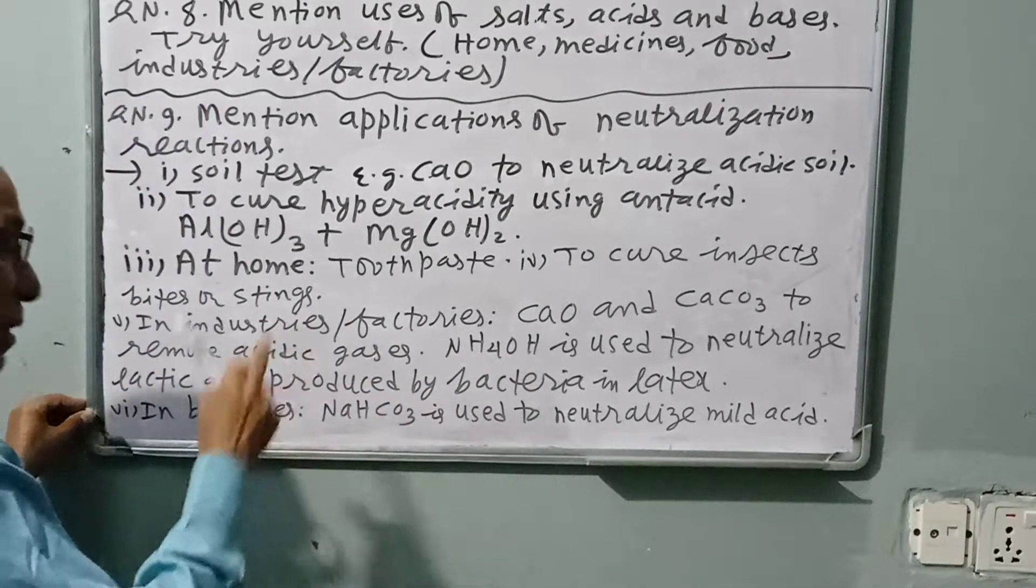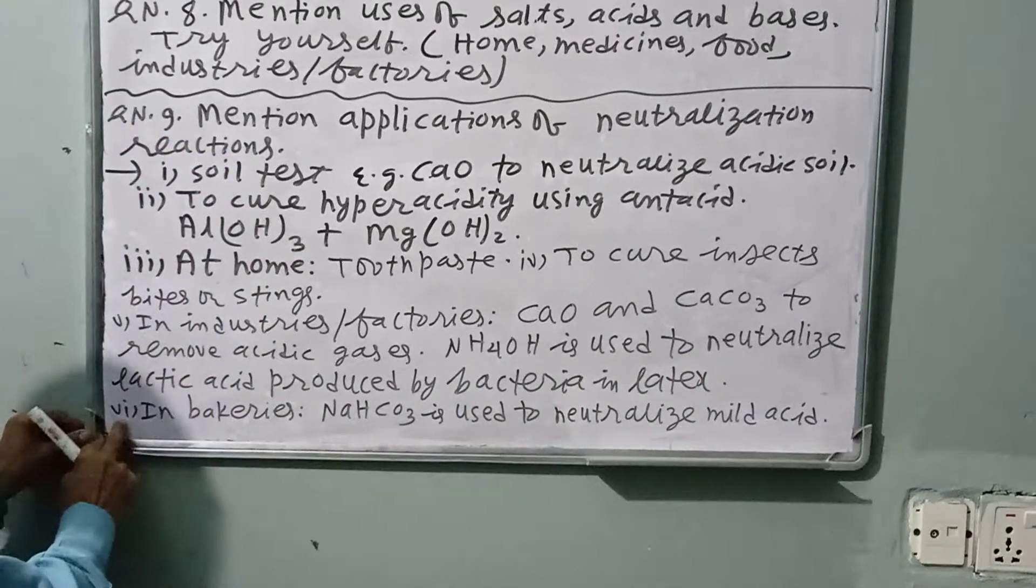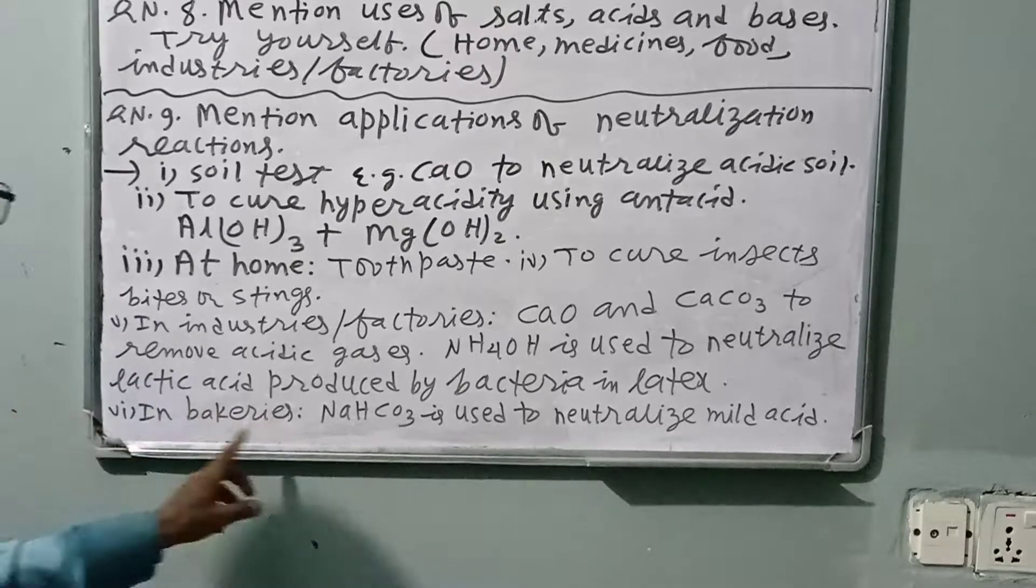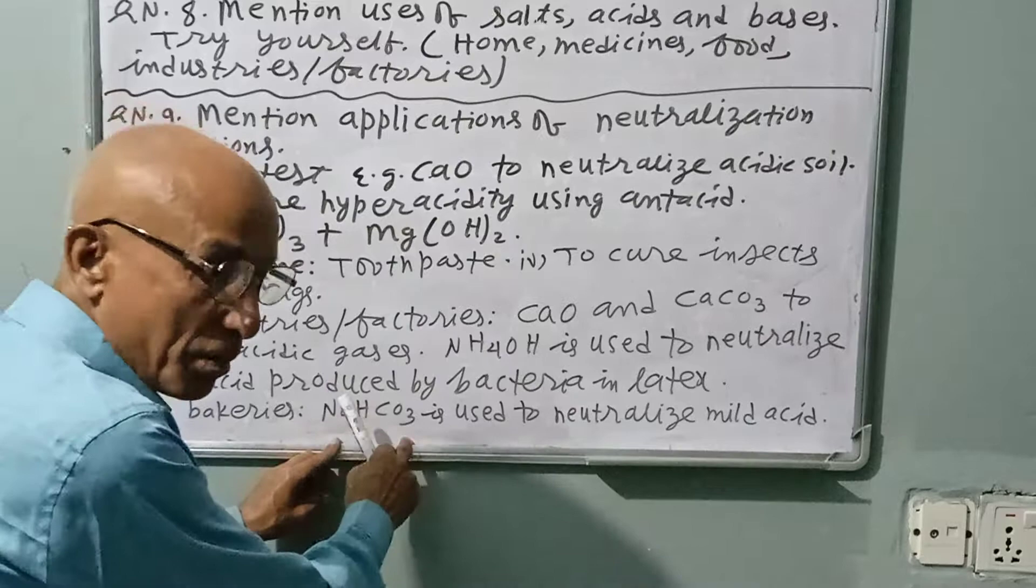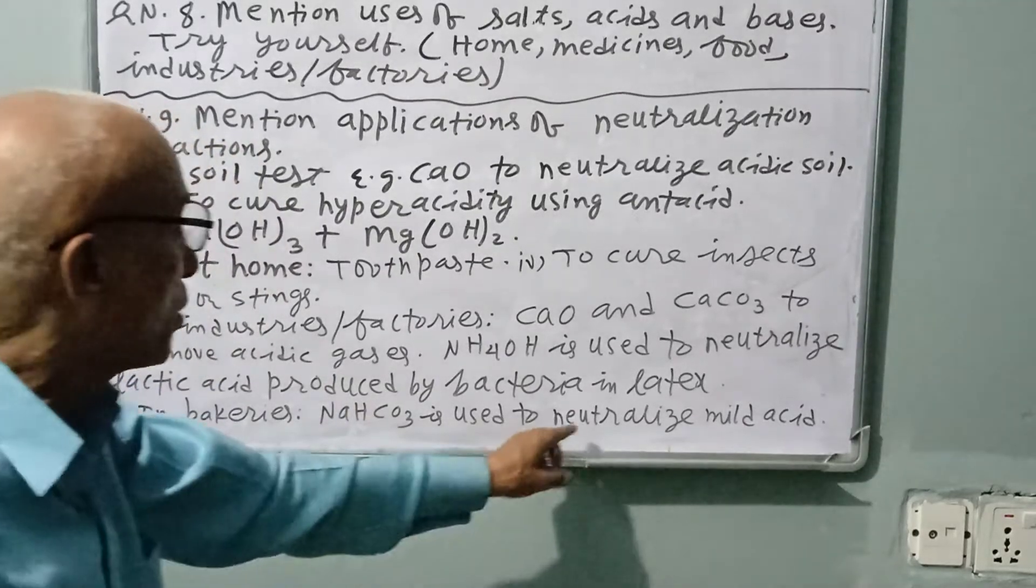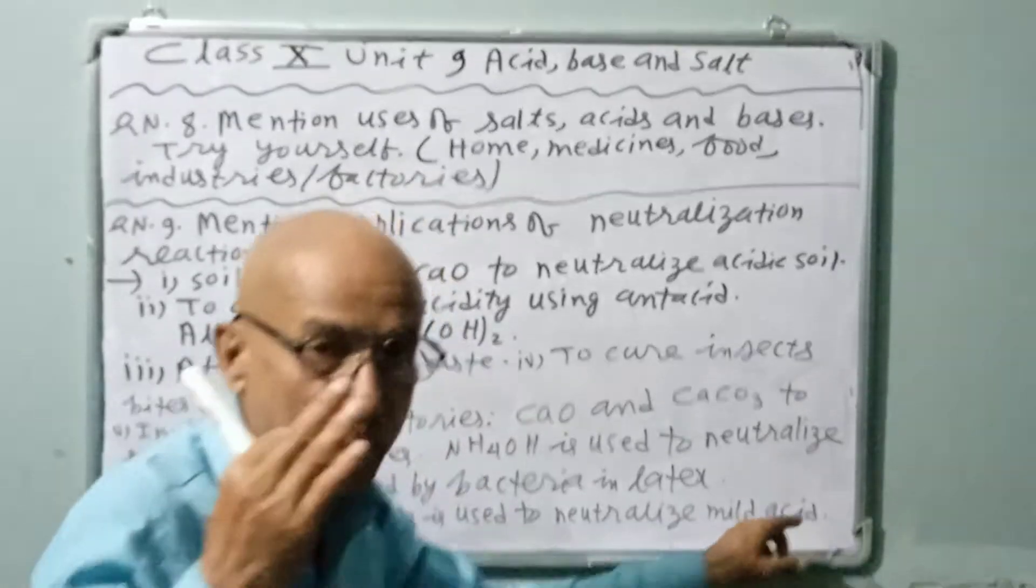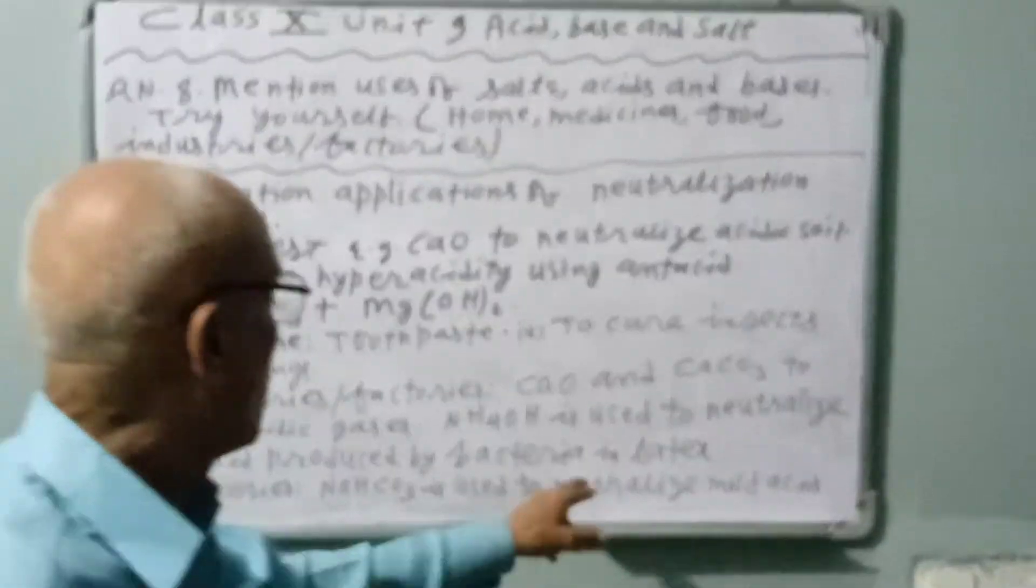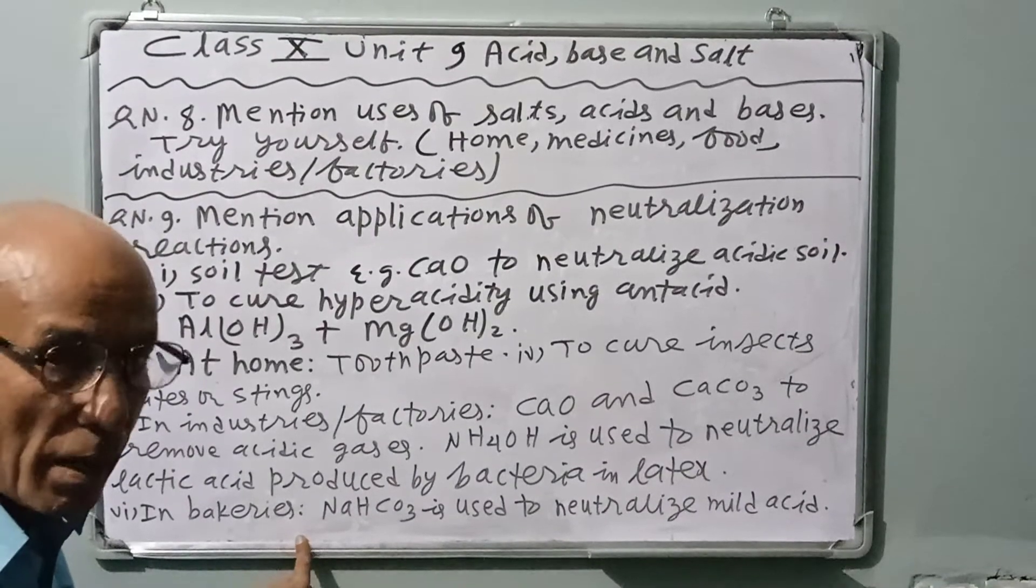Number six: In bakeries, baking powder, NaHCO3, sodium bicarbonate or baking soda, is used to neutralize acid in baking industry. Carbon dioxide is produced and it is very important in baking to make biscuits and cakes.